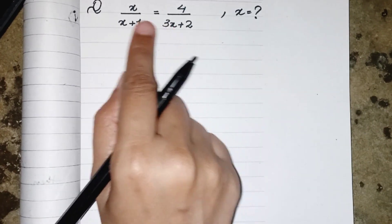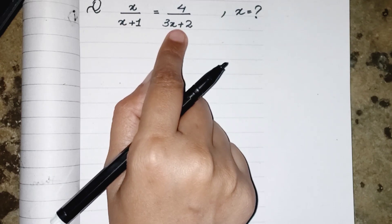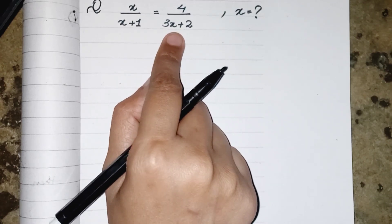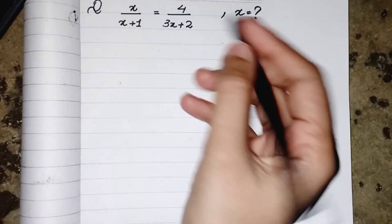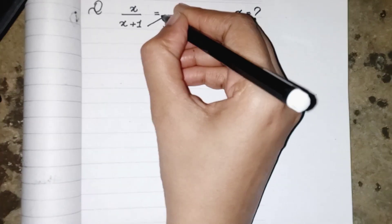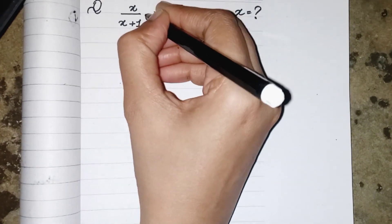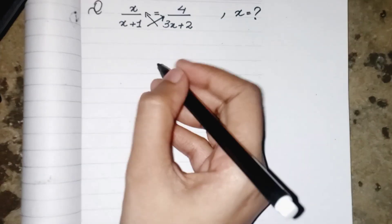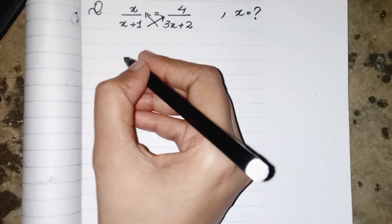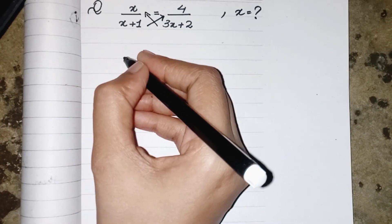To find x we have to solve these fractions. To solve these fractions we have to cross multiply them, which means the denominator of right side will be multiplied by the numerator of left side and the same thing done for the other side.